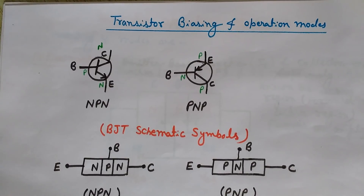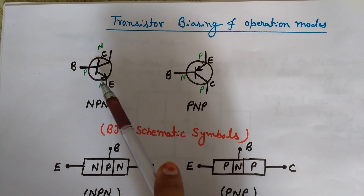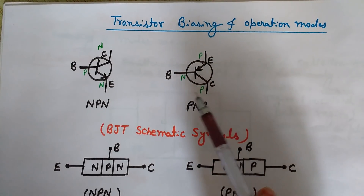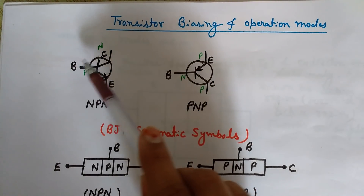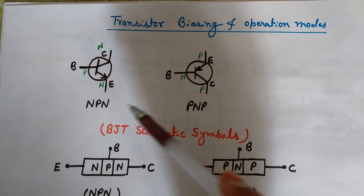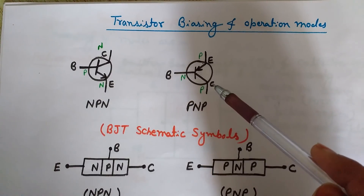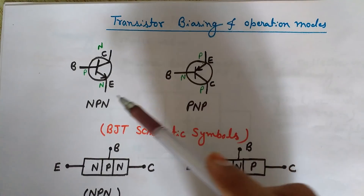We will see the basic concept of BJT and how we can operate this BJT transistor in different operating modes. This is the schematic symbol of an NPN transistor and here is the schematic symbol of a PNP transistor. As you can see, it has three terminals: emitter, base, and collector. Both NPN and PNP transistor types have three terminals: emitter, base, and collector.